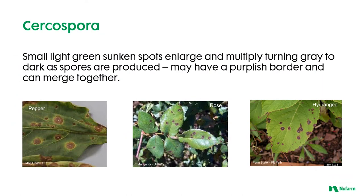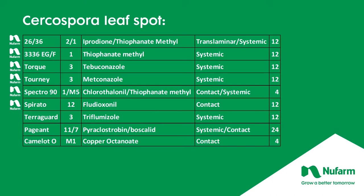Cercospora starts with small, light green sunken spots which enlarge and multiply, turning gray and dark as spores mature. They may have a purplish border and can merge to create large areas of necrotic leaf tissue. The spots show a lighter center surrounded by a darker area with a lighter halo, clearly visible on pepper, rose, and hydrangea. Control materials include 26/36, 3336, Torque, Tourney, Spectro 90, Spirato, Terra Guard, Pageant, and Camelot-O.